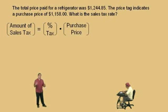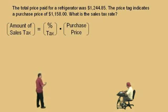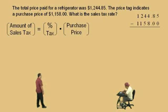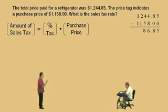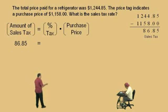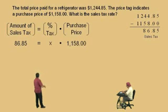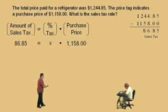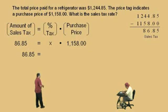So in order to calculate the amount of tax, we must take the difference of the total paid at the cash register and the purchase price. How much was paid at the cash register, Charlie? $1,244. From that we're going to subtract $1,158, and we get $86.85. That's the amount of tax. So now let's come back to our equation. Our amount of tax is $86.85, and that must equal the percent tax as a decimal — that's what we're trying to find, so that will be our x. And what is our purchase price, Charlie? $1,158. So our equation is: 86.85 is equal to 1,158.00x.